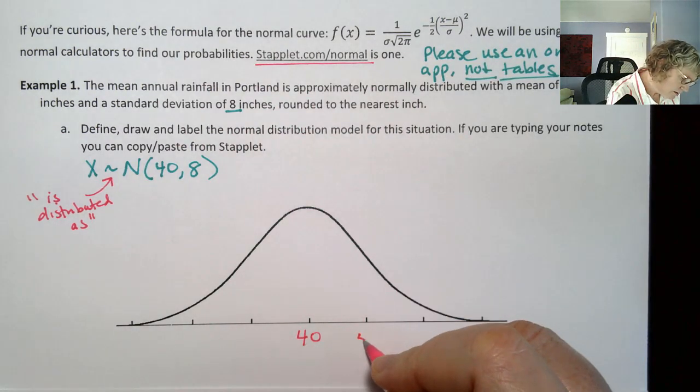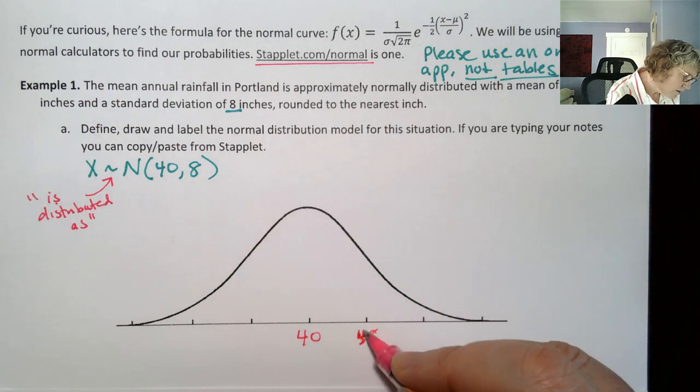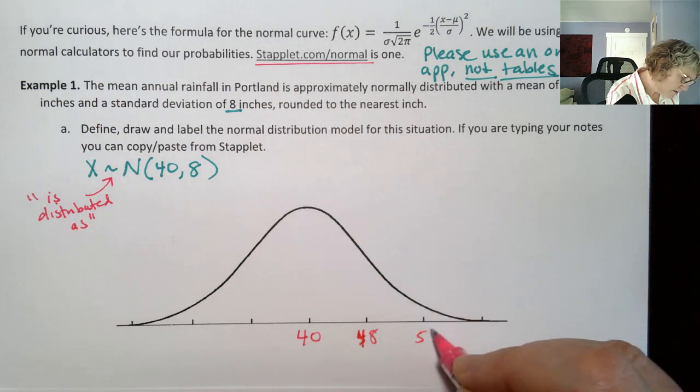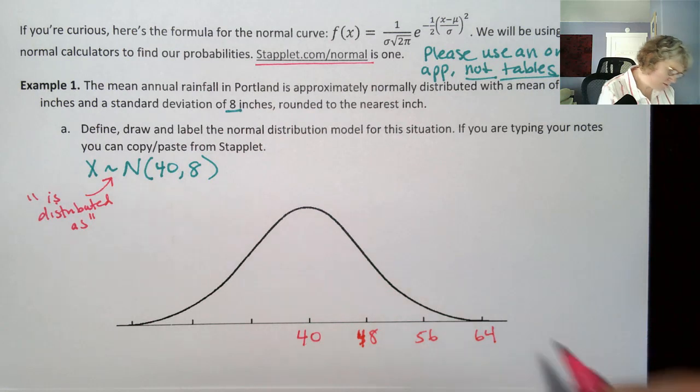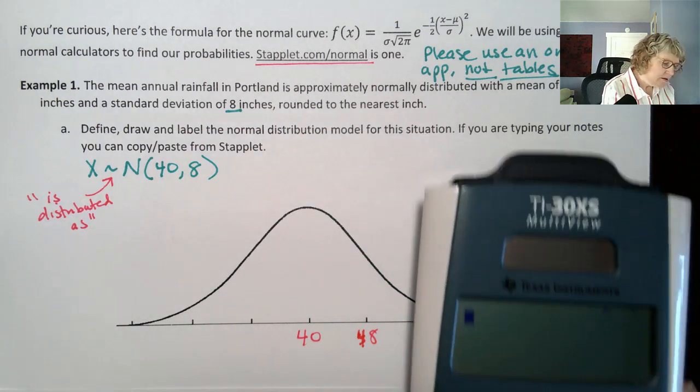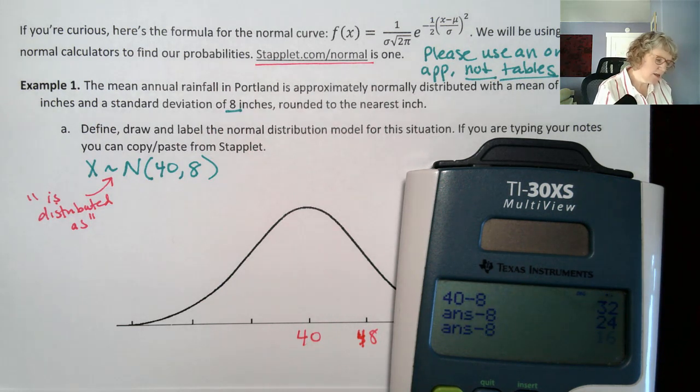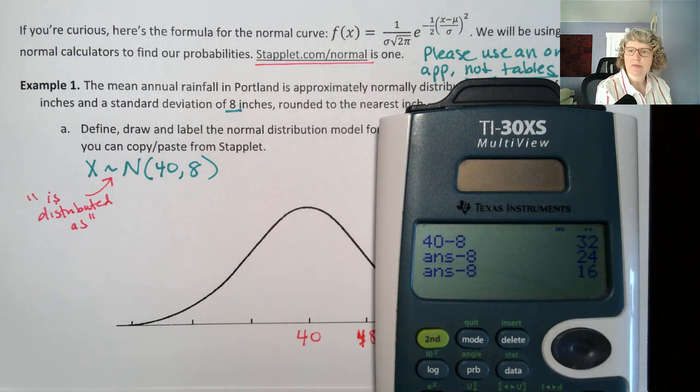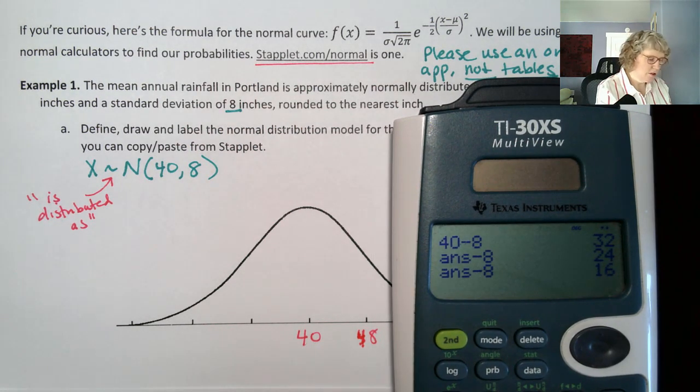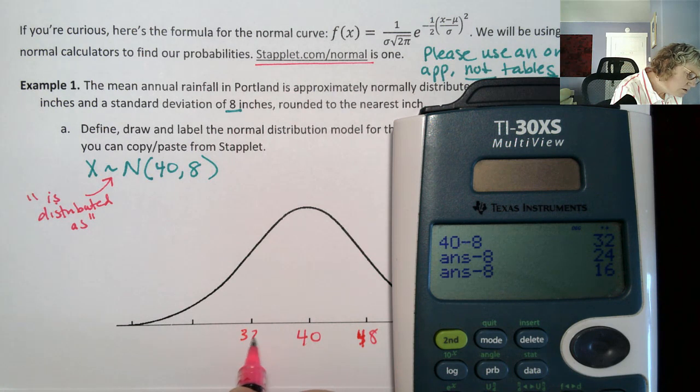So let's go up from 40, 40 plus eight. I'm just going to do plus eight, plus eight. So that is a fast way to get all three of those. So 48, then eight more is 56 and eight more is 64. Similarly, I can go down from 40, 40 minus eight, minus eight, minus eight. So I'm going down by eight. So 32, 24 and 16.